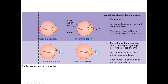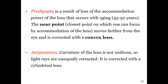In this situation, a convex lens is used to converge the light rays and bring them closer together. As a result, the far light source focuses on the retina without accommodation, and the near light source also focuses on the proper area of the retina, producing a clear image.